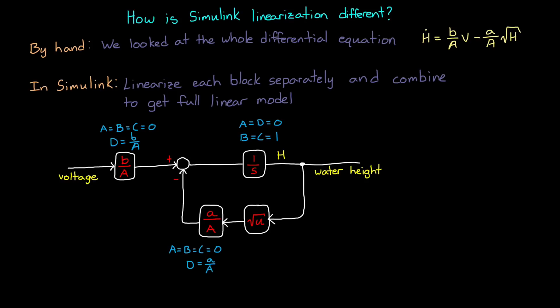The water tank model only has the one nonlinear block, which is the square root function. So, how would Simulink handle this?